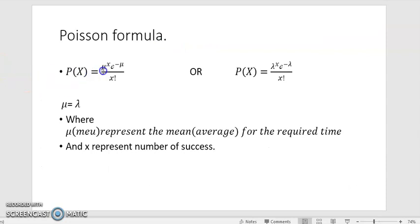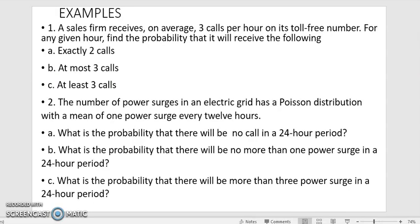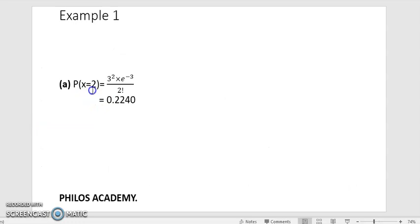Go back to the formula. Anywhere you see mu, you substitute what has been given to you as a mean there. And you substitute what you are finding in place of X. The first question says exactly 2, meaning our X is 2. So probability that X is exactly 2 equals mu exponent X, that is 3 exponent 2, times E exponent negative mu, where the mu is 3, so negative 3, all divided by X factorial, that is 2 factorial. When you fix this on your calculator, you get 0.2240.